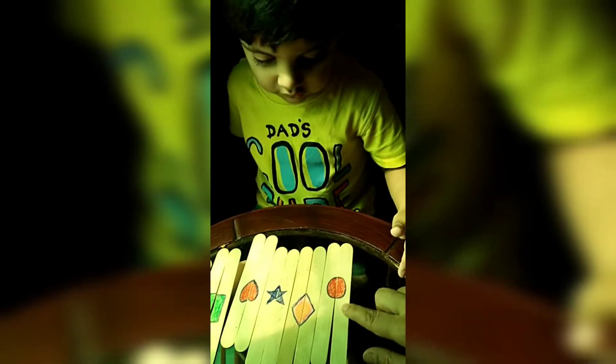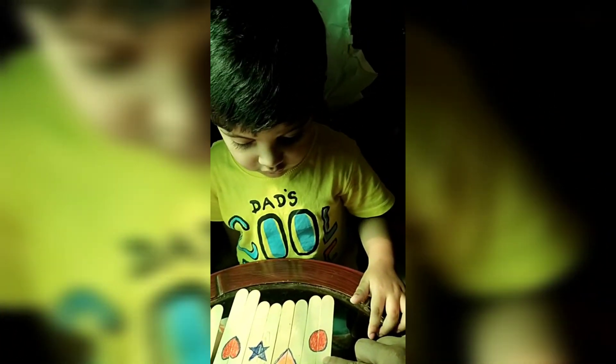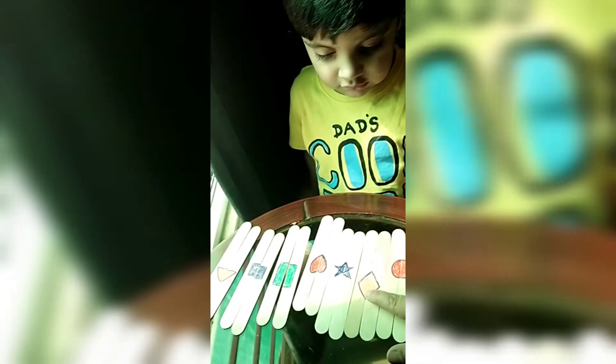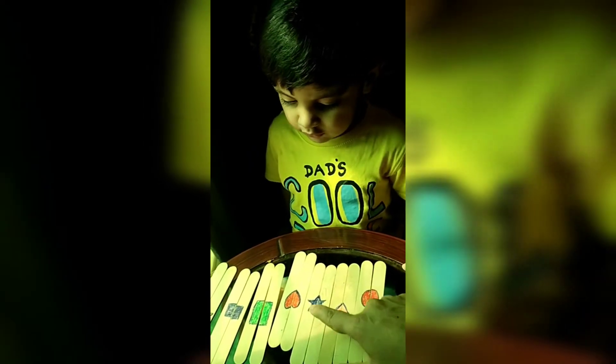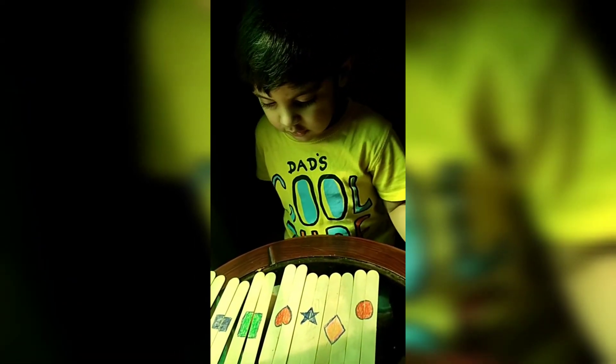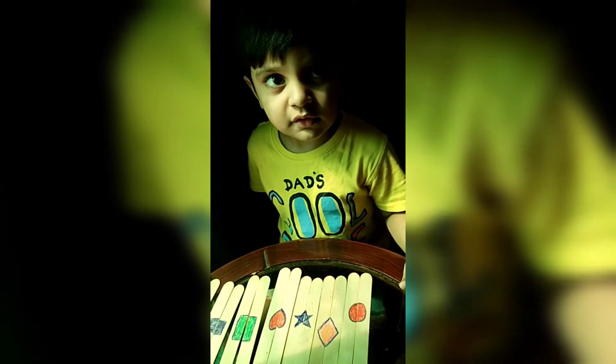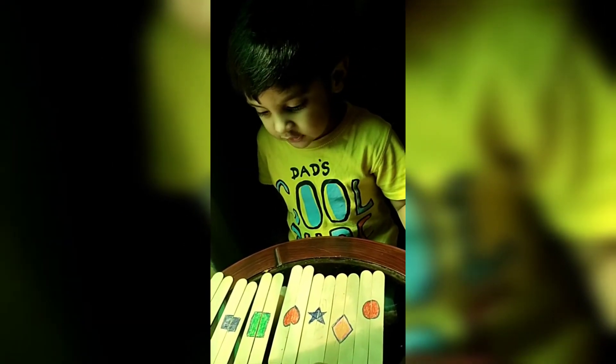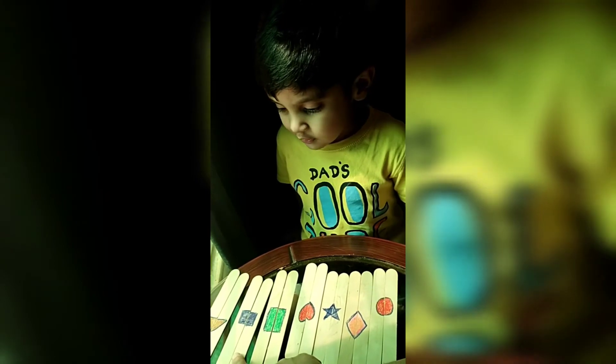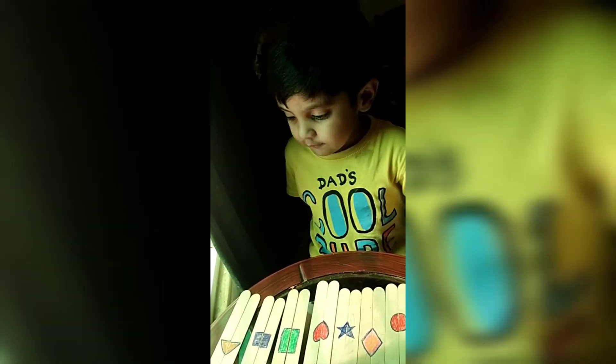Which shape is this? Yes, this is diamond. What is this? Star. What is this? Heart, rectangle, square, and triangle.